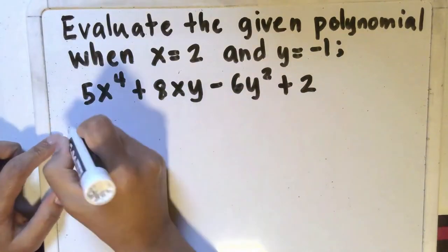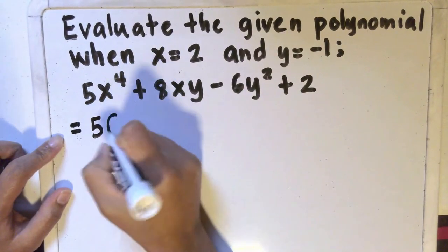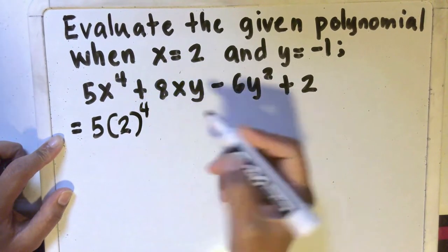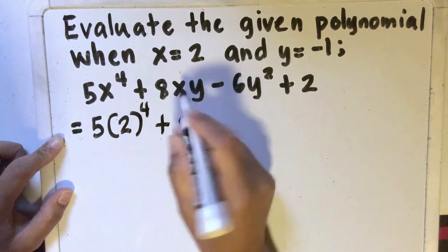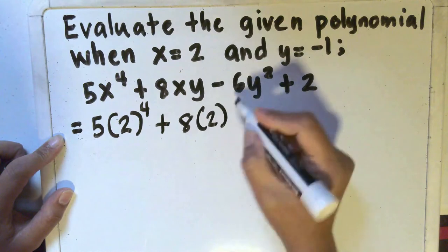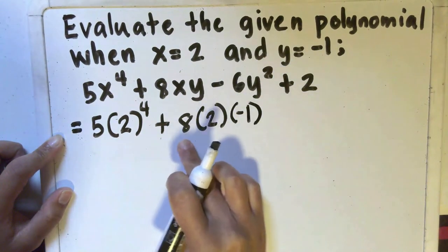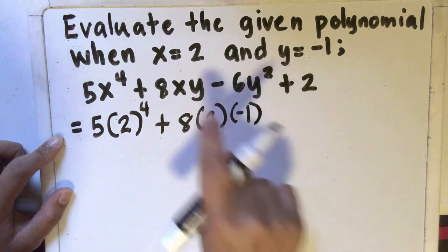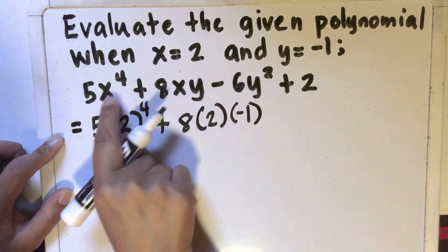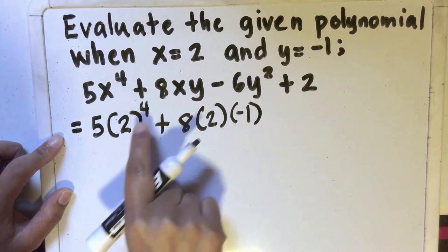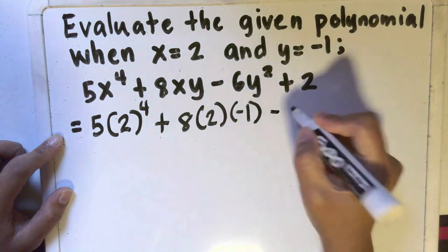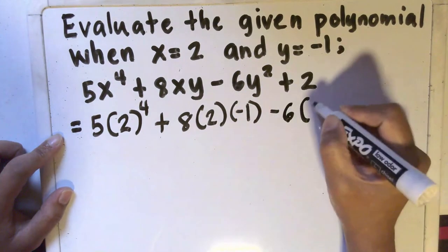So let's go ahead and do that. We'll have 5 and then we'll replace x with 2, plus 8. We'll replace x again with 2 and substitute negative 1 for y, so we'll have 8 times 2 times negative 1, because 8xy means 8 times x times y and 5x to the 4th means 5 times 2 to the 4th. In the same manner, 6y squared means 6 times y squared.